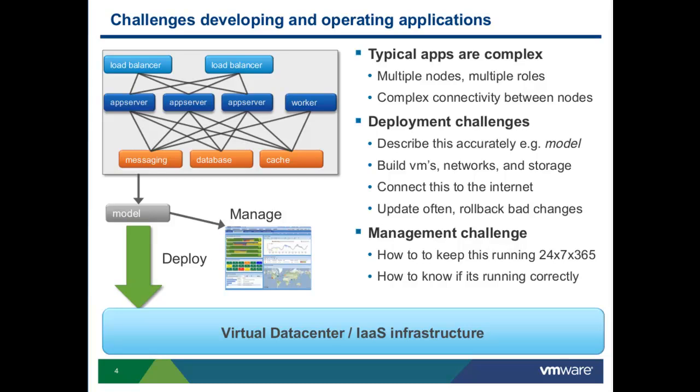What do I mean by complex? You get multiple nodes and multiple roles within a node. You need to connect between those nodes in a pretty complex manner. You get deployment challenges — how do I build a VM, manage the network, make it accessible over the Internet with load balancers? What happens when I scale the app, do updates, rollback, or change environments between development, QA, staging, and production? And on top of all that, you get the management challenge of keeping it running 24/7 correctly.